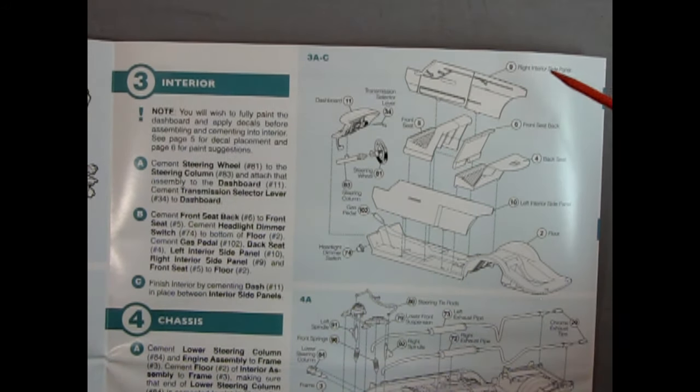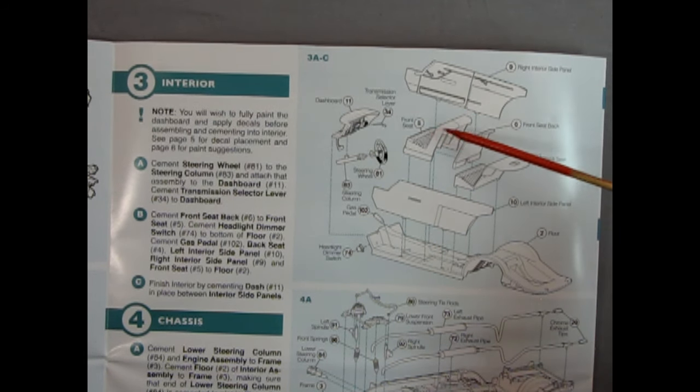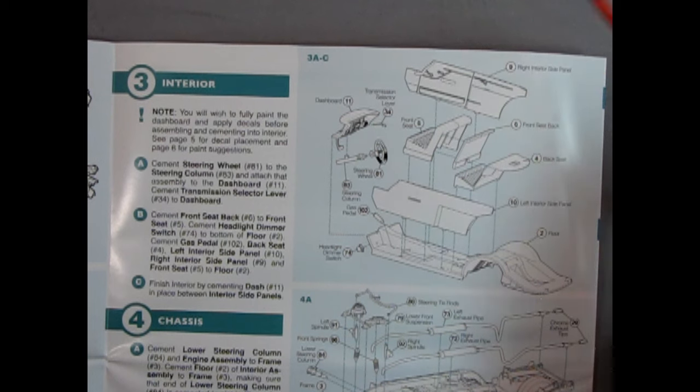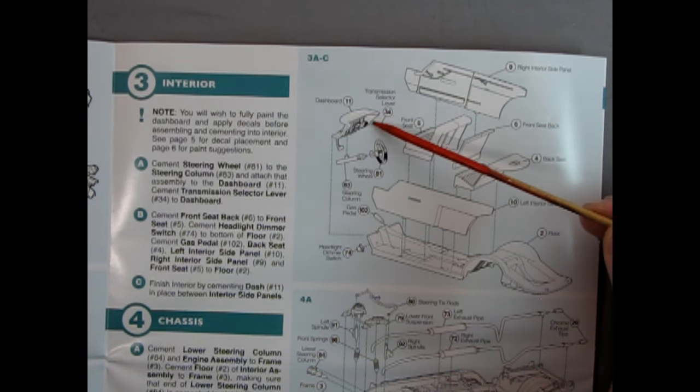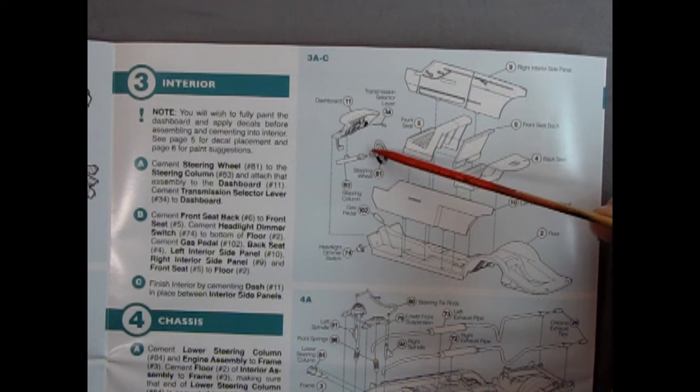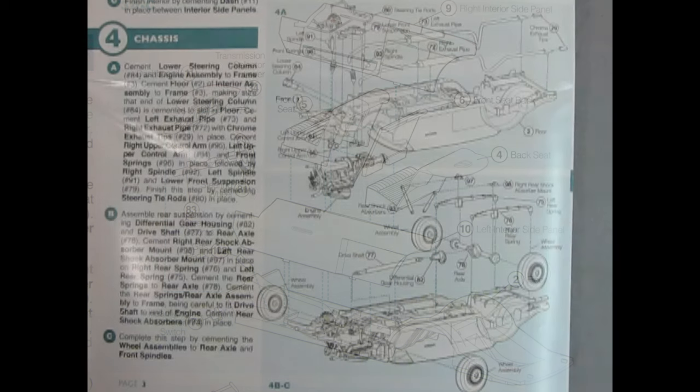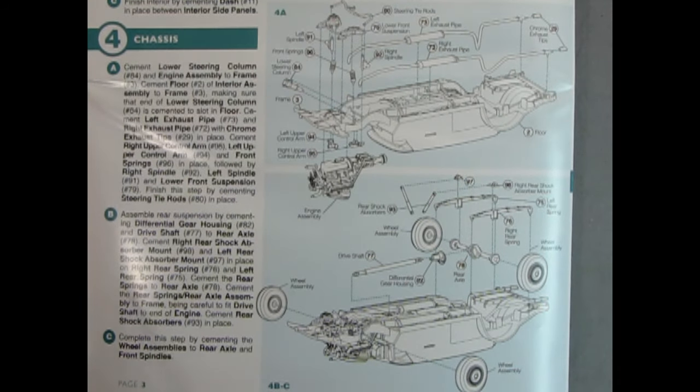Over here in panel three, we start to assemble our interior. So here we have the right side interior panel. And then we've got our bench seat with a seat back. As well as our back seat and the left interior side panel. All these drop down onto the floor. We also have a gas pedal, a headlight dimmer switch. Now that's pretty cool. You don't usually see these as a separate part in a model anywhere. A dashboard, transmission selector lever, as well as our steering wheel and the steering column.